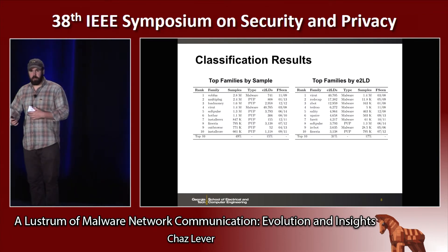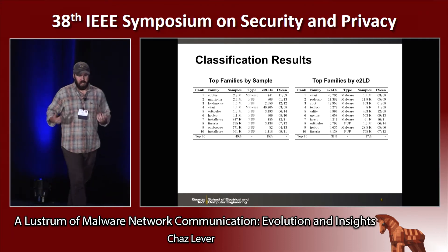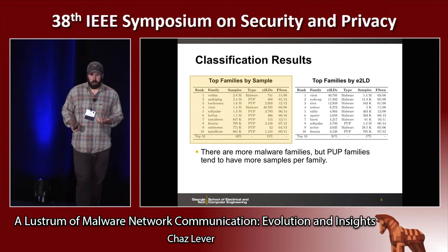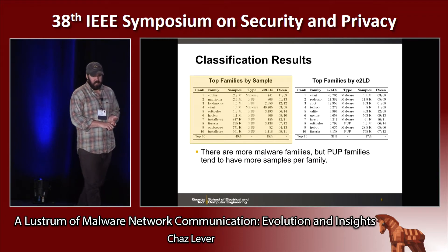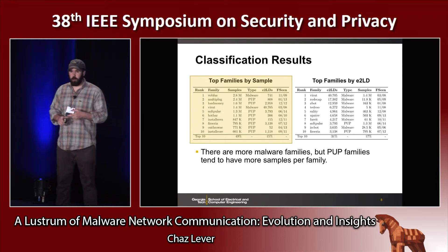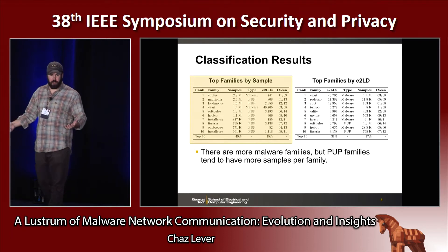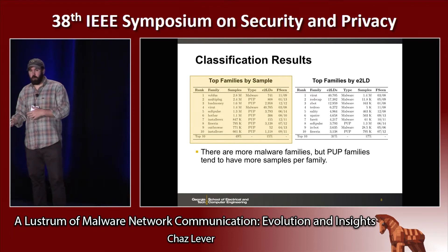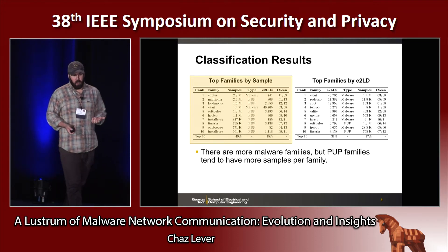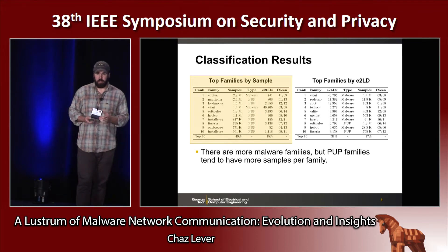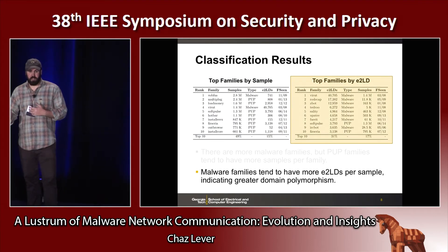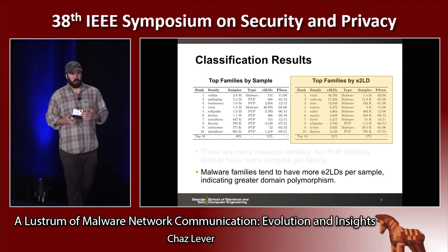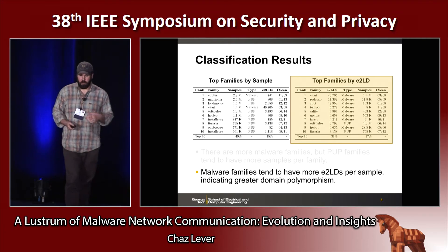Another thing we looked at, related to this classification of PUP versus malware, is whether there are differences in behavior — and yes, there were. We saw that there were actually more malware families, but the PUP families tended to have more samples per family, due to greater binary polymorphism, likely from evasion of AV signatures. But traditional malware samples, even though they had fewer samples, tended to query more effective second-level domains per sample, indicating greater domain polymorphism.